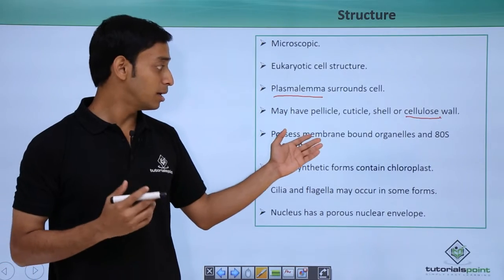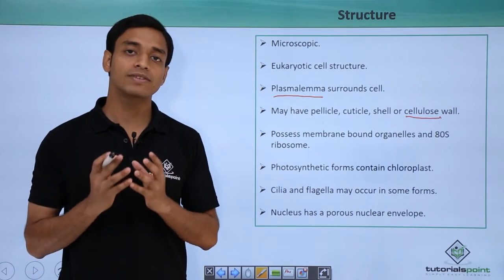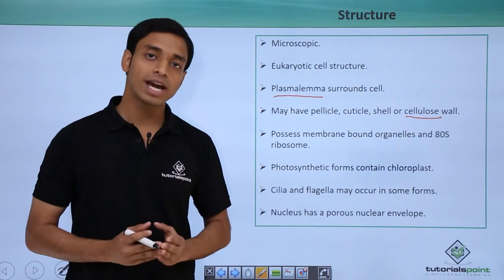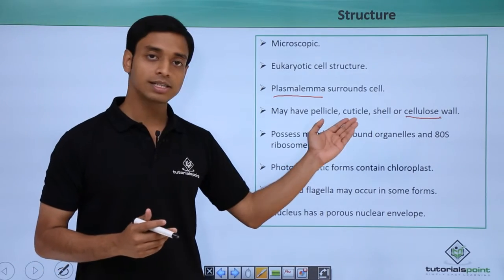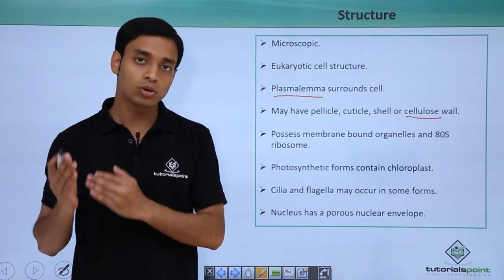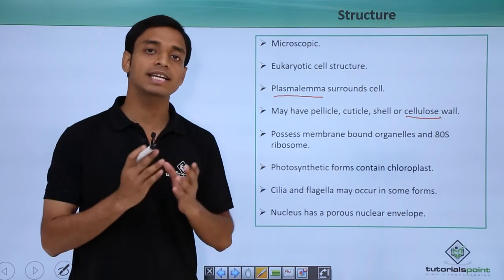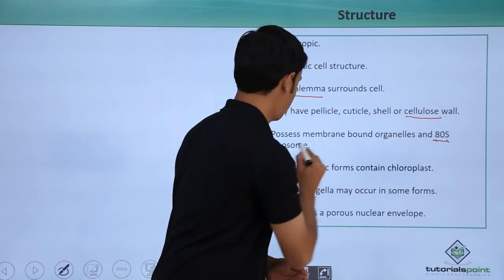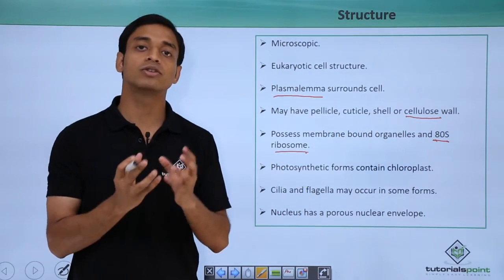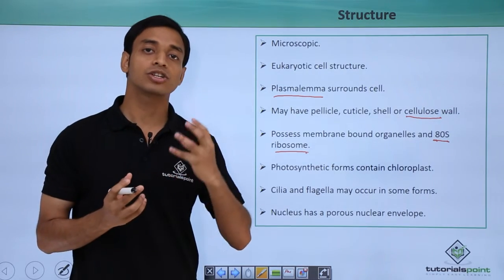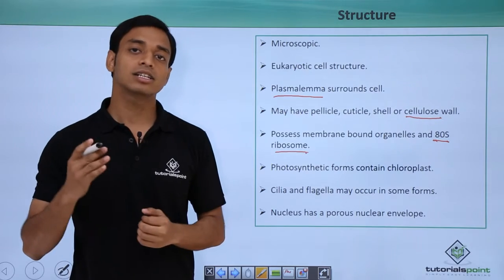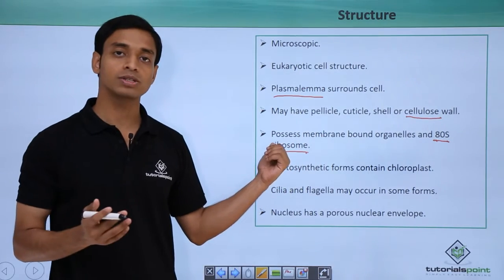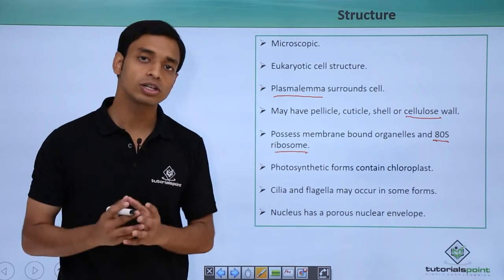Now they possess membrane-bound organelles. Unlike the Prokaryotes, which do not have membrane-bound organelles, these are eukaryotes and they have got membrane-bound organelles. Again, compared with the Prokaryotes which have 70S type of ribosomes, here the ribosomes are typically 80S type. This 80S is composed of two subunits: one larger unit which is 60S and another smaller unit which is 40S. They both combine to form the 80S type of ribosomes in case of Protists, and basically in case of all eukaryotes.